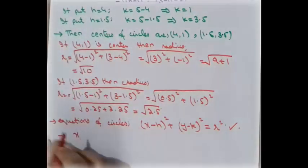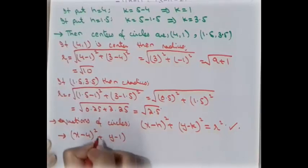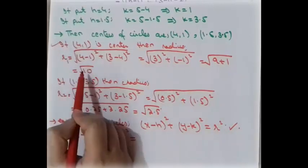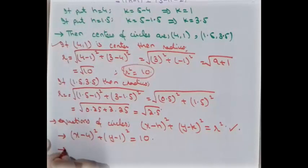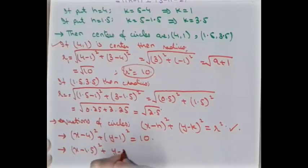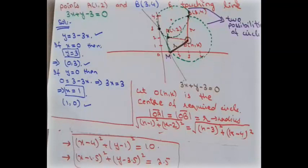The first equation of the circle with center (4, 1) and radius √10 is: (x − 4)² + (y − 1)² = 10. The second equation with center (1.5, 3.5) and radius √2.5 is: (x − 1.5)² + (y − 3.5)² = 2.5. These are the two required equations of the circle. This is the complete procedure for finding the equation of a circle passing through two points and touching a given line.